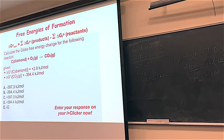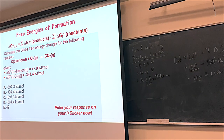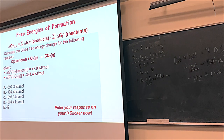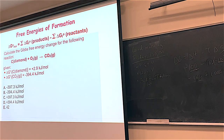Let's find delta G for making carbon dioxide from diamond. Diamond is a form of carbon, and you can make CO2 from it. Here's the delta G value for CO2, the value for diamond, and oxygen — as an element in its standard state — has delta G equal to zero. Delta G of products minus delta G of reactants: delta G of CO2 minus delta G of diamond minus delta G of O2 (which is zero). This gives negative 397.3 kilojoules per mole.